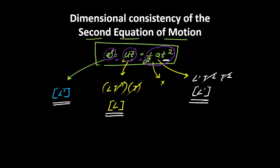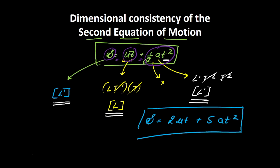Here is a question for you: if instead of this equation I had s = 2ut + 5at², would it also be dimensionally consistent? Think for a moment. The answer is yes — because in the original equation, ½ had no dimension; it was dimensionless. So whether it is ½ or 5, or 1ut versus 2ut, the equation would still be dimensionally correct. However, it is obviously not the physically correct statement. This is one limitation of dimensional analysis: since constants are dimensionless, we cannot determine whether the constants in an equation are correct or not.